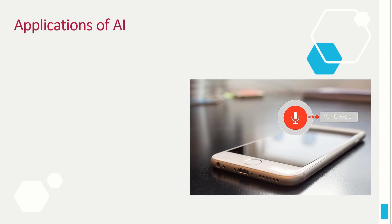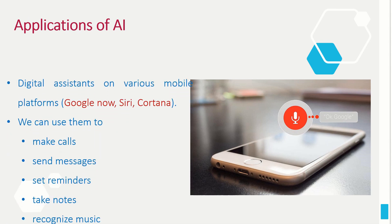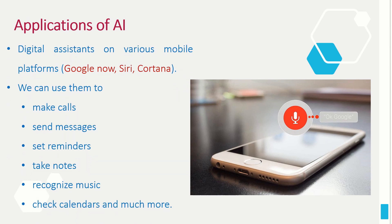The next application is digital assistants. Google Now, Siri, and Cortana are various digital assistants available on different mobile platforms. We use them to make calls, send messages, set reminders, take notes, recognize music, check calendars, and much more. These are some of the applications of artificial intelligence.